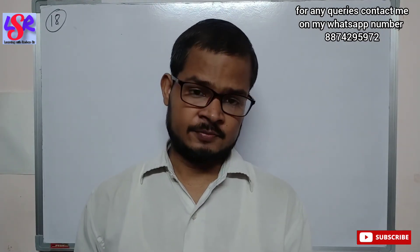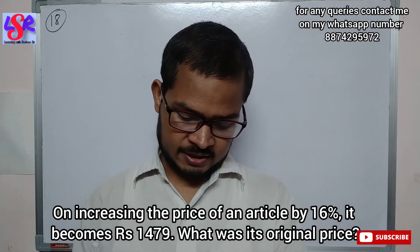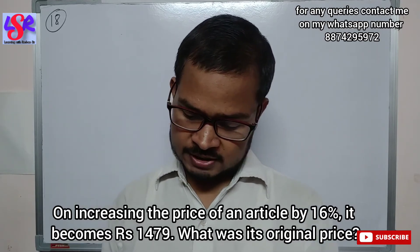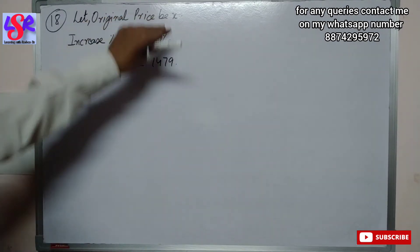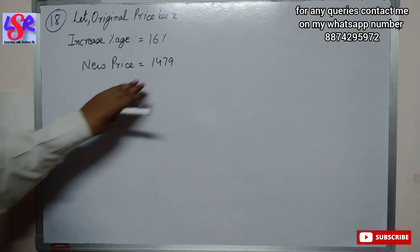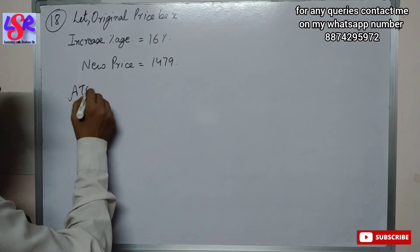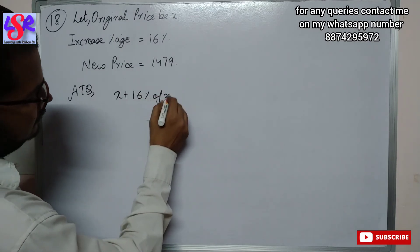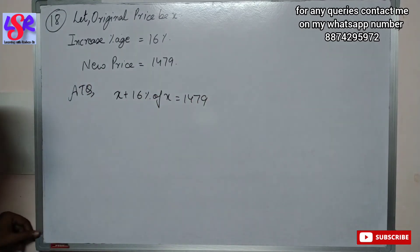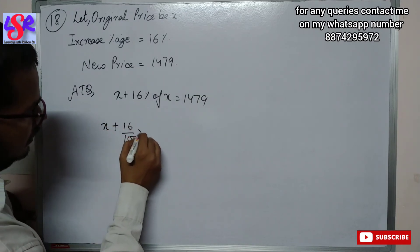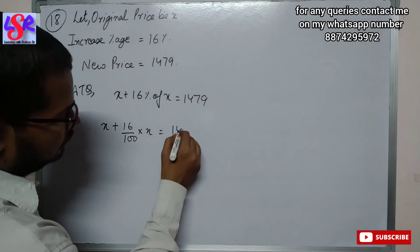Now let's see question number 18. On increasing the price of an article by 16%, it becomes 1479. What was its original price? We assume the original price to be x. The increase percentage is 16% and the new price is 1479. So according to the question, x plus 16% of x equals 1479. This will be x plus 16 upon 100 times x equals 1479.